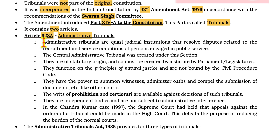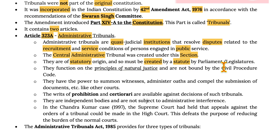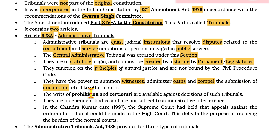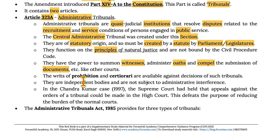Under Article 323A, administrative tribunals are quasi-judicial institutions that resolve disputes related to recruitment and service conditions of persons engaged in public service. The Central Administrative Tribunal was created under this section. They are of statutory origin and must be created by a statute of the parliament or legislature. They function on the principle of natural justice and are not bound by the Civil Procedure Code. They have the power to summon witnesses, administer oath, and compel the submission of documents like any other court. The rights of prohibition and certiorari are available against the decisions of these tribunals, and they are independent bodies not subject to administrative interference.